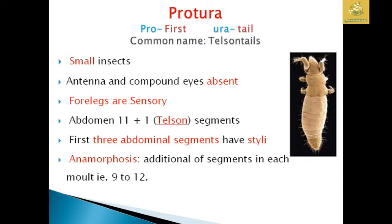The forelegs are used as sensory organs in these insects and the abdomen has 11 plus 1 segments. The 12th segment is known as the telson. The first three segments have styli. Anamorphosis is present — meaning segments are added at each molt, from 9 to 12. At birth they have 8 segments; after each molt one segment is added.